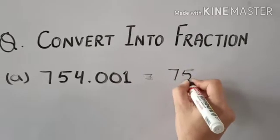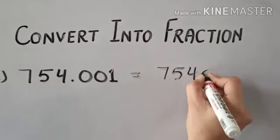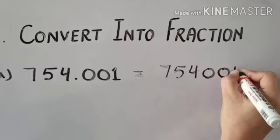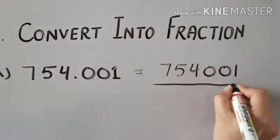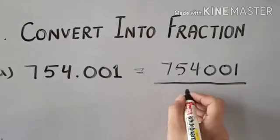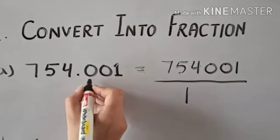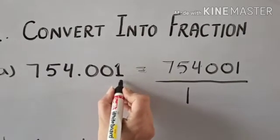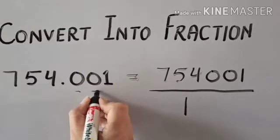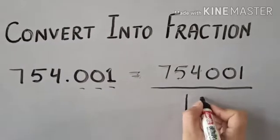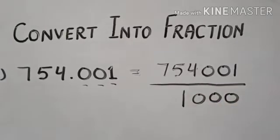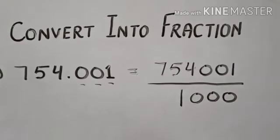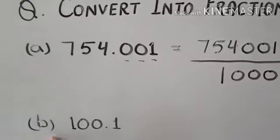So 754001. Now we are going to write the numerator. Write one in the denominator. Now count the decimal places: 1, 2, 3, and write three zeros. The answer is 754.001 equals 754001 upon 1000.